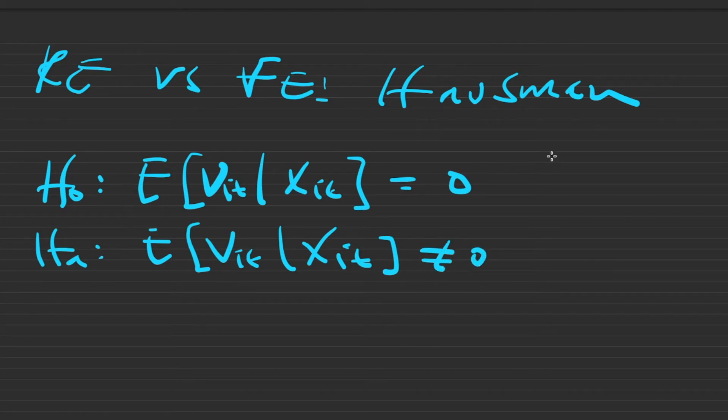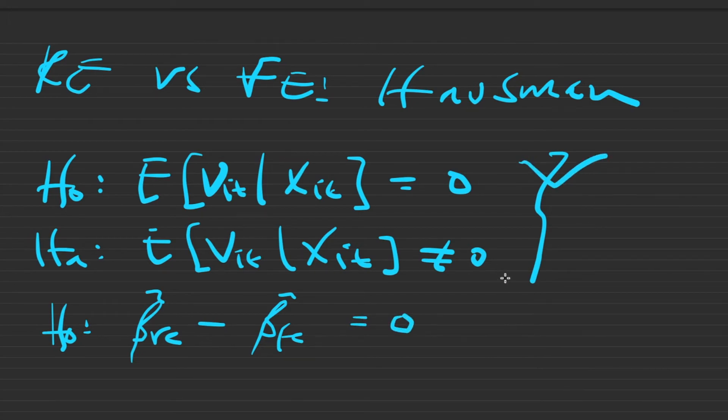These are the theoretical hypotheses. We can rewrite these in terms of empirics. The way that we would test these is by comparing the coefficients. Under the null, the estimate of the coefficient in random effects minus the estimate of the coefficient in fixed effects are the same, which would be true if they are both unbiased.